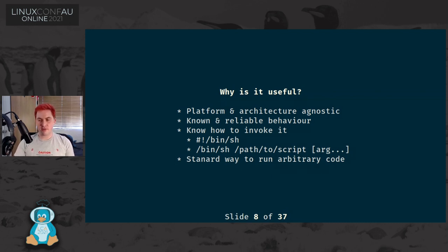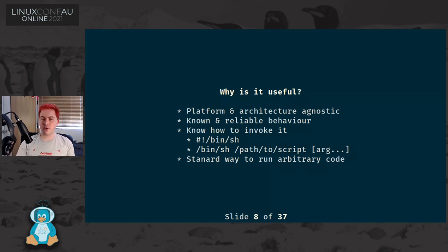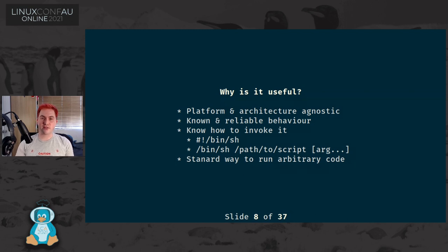If you have a script that gets run on any POSIX system and you're only relying on other parts of the POSIX specification, it should operate the exact same way no matter which variant of POSIX, which actual implementation of the POSIX interface you're using. You always know how to invoke it - either a script that starts with the shebang or you pass it directly to the application itself, which lives at /bin/sh. And it provides a nice standard way to run arbitrary code without knowing anything else about the operating system.